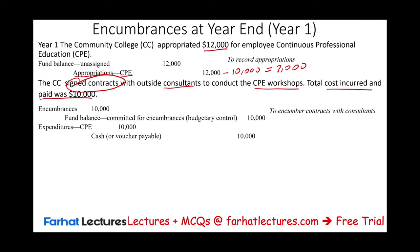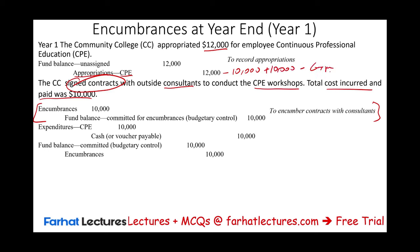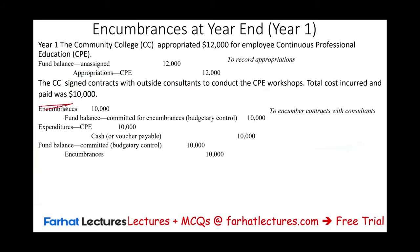Are we done? Absolutely not. We have to reverse the encumbrance. The encumbrance we recorded when we signed the contract for $10,000 must now be removed. We reverse that entry: debit fund balance committed for encumbrances $10,000, and credit encumbrances $10,000. Notice that regardless of the actual payment amount — for example, if the consultant gave a $500 discount and we only paid $9,500 — we still reverse the encumbrance for the original amount, $10,000.